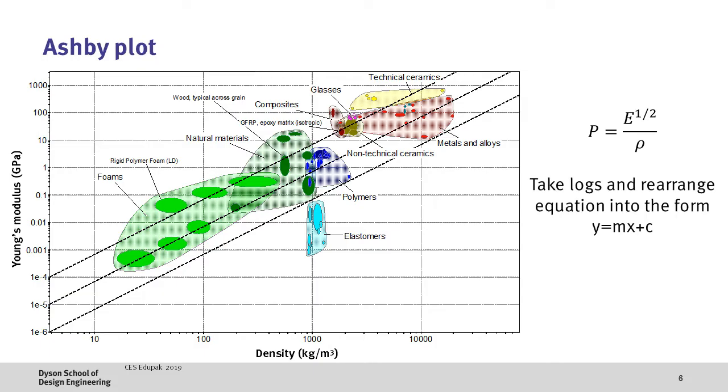Now if we return back to our performance index equation and rearrange this we can start to down select materials for our application. If we take logs of both sides of our performance index equation and rearrange this into the form y equals mx plus c we get the equation below. Now what this tells us is if I draw a line with a gradient of 2 on my log Young's modulus against log density plot all the materials along the line will have the same stiffness performance index. To get materials with a superior performance index we need to move our line up to have a higher y-intercept.